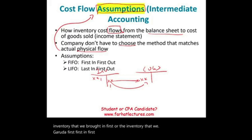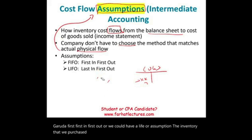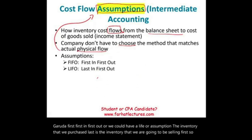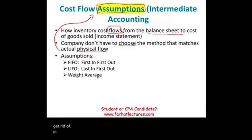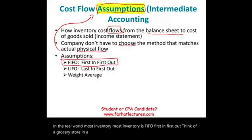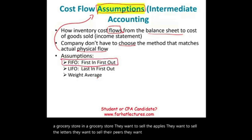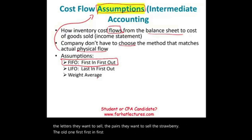Or we could have a LIFO assumption — the inventory that we purchased last is the inventory that we sell first. So last in, first out. In the real world, most inventory is FIFO. Think of a grocery store — they want to sell the apples, the lettuce, the pears, the strawberries, the old ones first, first in first out. Otherwise they will go bad. For most merchandise, you want to get rid of the old inventory first.